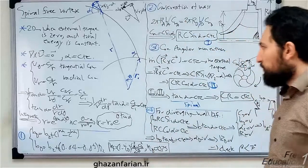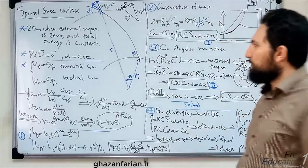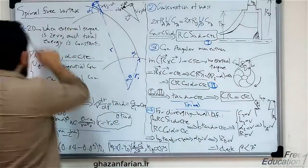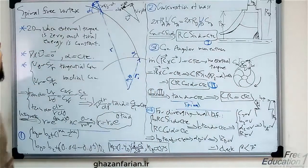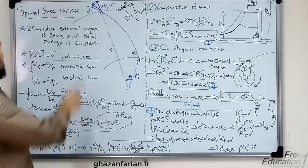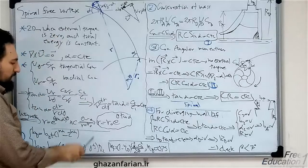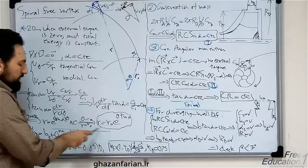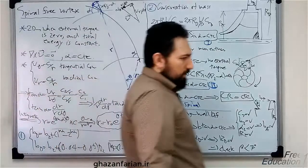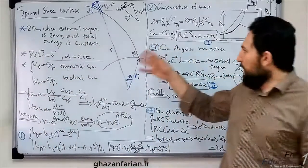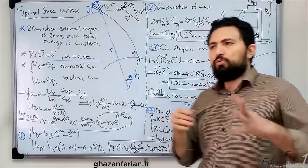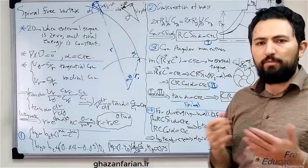In previous videos I have introduced different types of free vortices and forced vortices. One of these well-known free vortices is the spiral free vortex, which is a type of logarithmic spiral. This type of vortex can be used to design a diffuser for a pump.